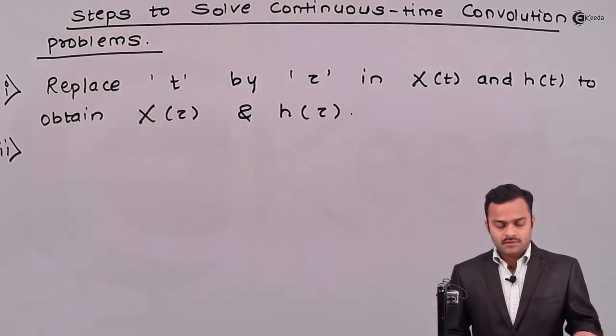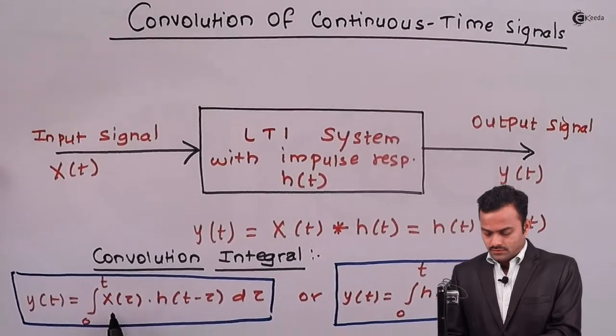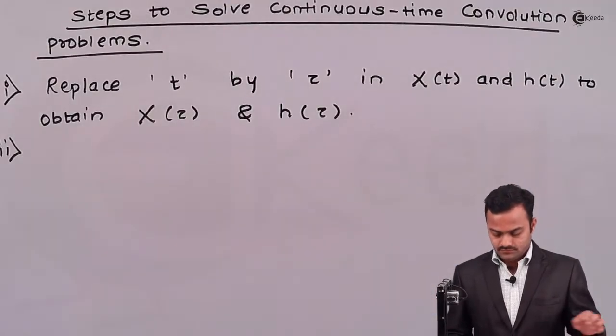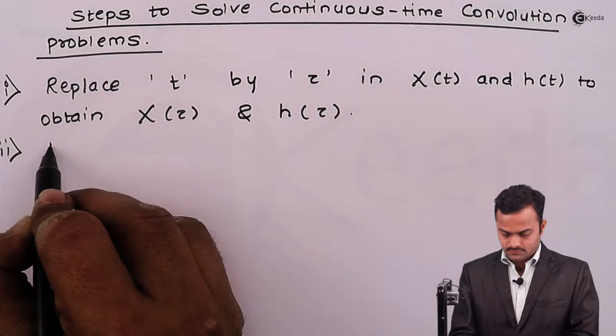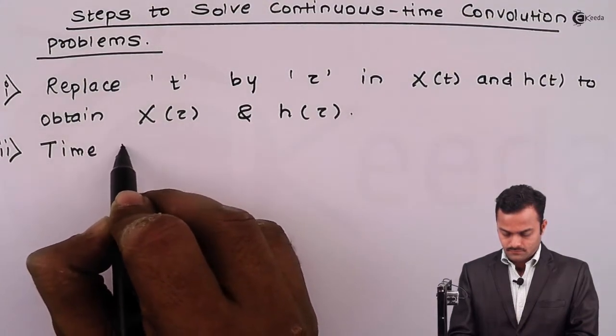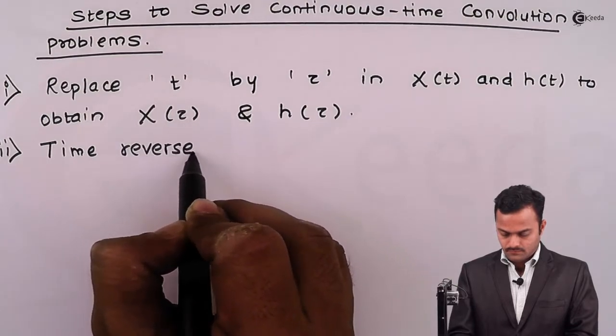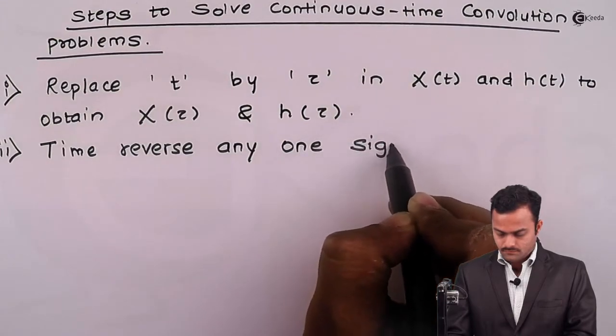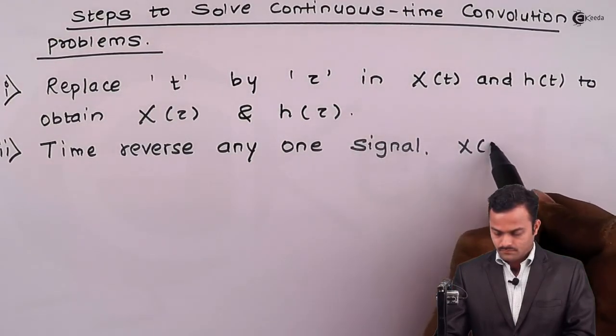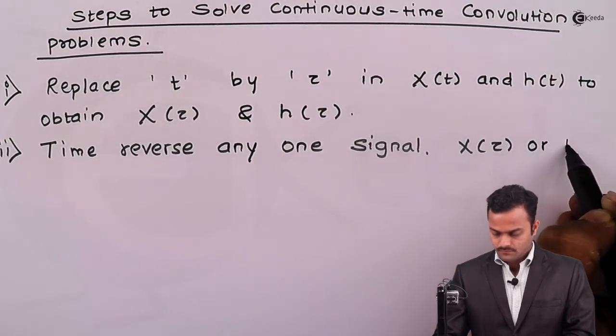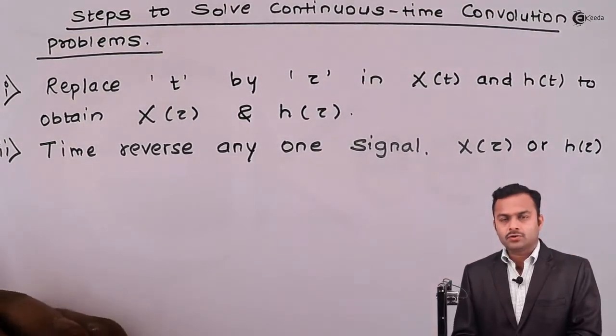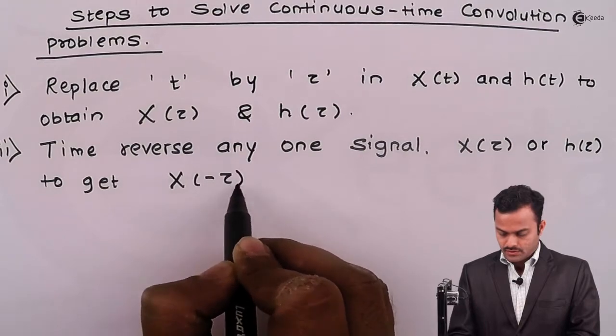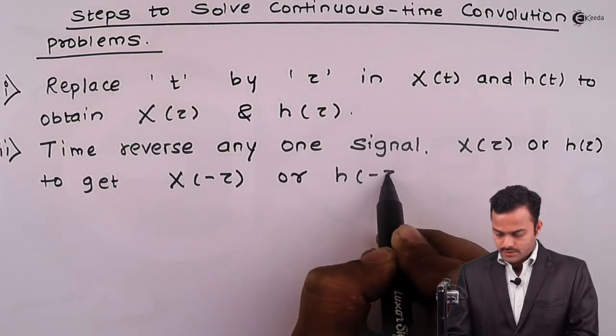Step number 2. Then, out of two signals, any one signal you have to do a time reversal in order to get x(-τ) or h(-τ).